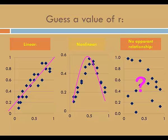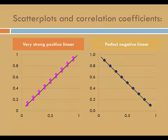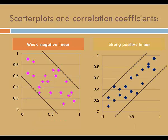Let's focus on scatter plots that indicate a linear association. In the scatter plot on the left, we see a very strong linear association — it turns out that the correlation coefficient is 0.995. In the scatter plot on the right, I see a perfect negative linear association, and so I expect the correlation coefficient to be negative 1. In the scatter plot on the left, I see a weak negative linear association — the correlation coefficient is negative 0.65. In the scatter plot on the right, I see a strong positive linear association, and it turns out that the correlation coefficient is 0.87.